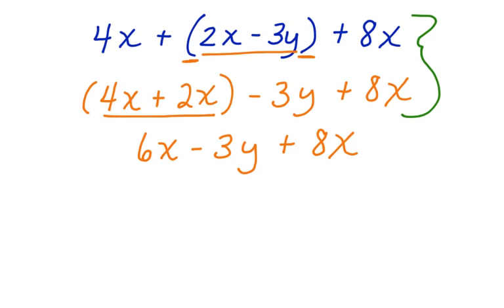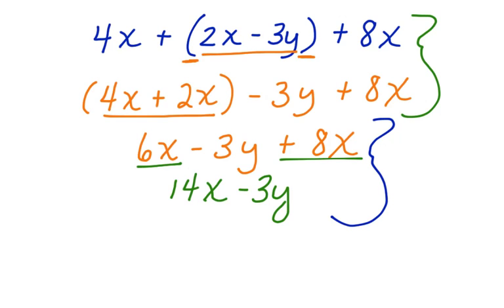Now look at this next step. I have 6x and I have 8x. I'm going to move the 8x, and I'm going to combine like terms. 6x plus 8x is 14x minus 3y. In this second part, I used the commutative property.